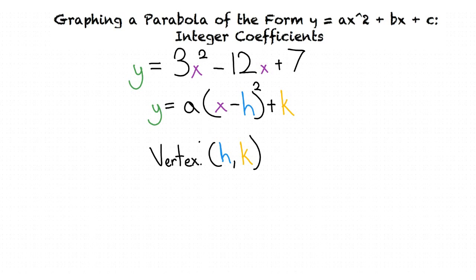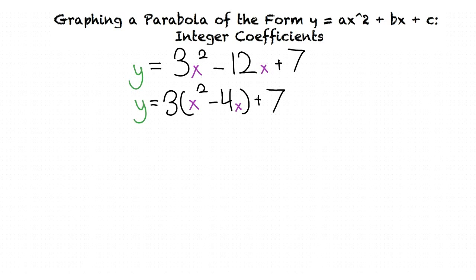How will we rewrite our problem into the form y equals a(x minus h)² plus k? We are first going to factor out 3 from our first two terms. This leaves us with y equals 3(x² minus 4x) plus 7. We now need to complete the square for x² minus 4x. We do this by dividing the coefficient of our linear term, negative 4, by 2 to get negative 2. Then we square negative 2 to get 4.